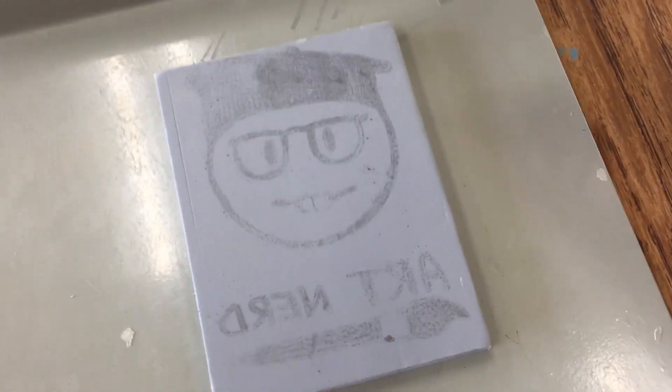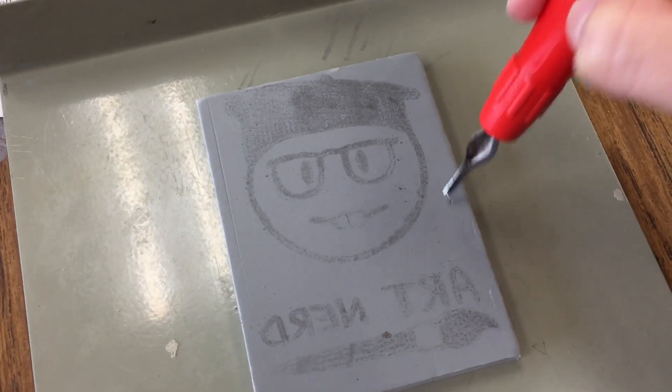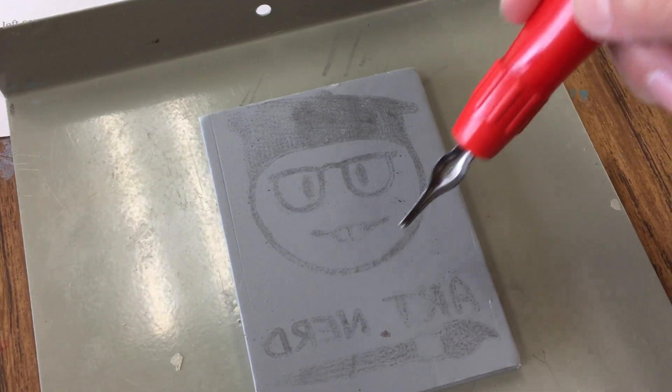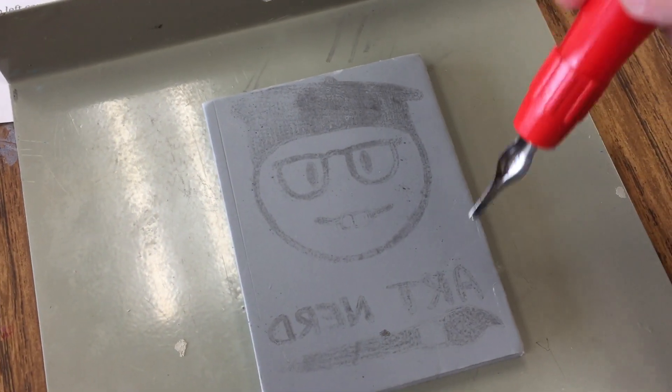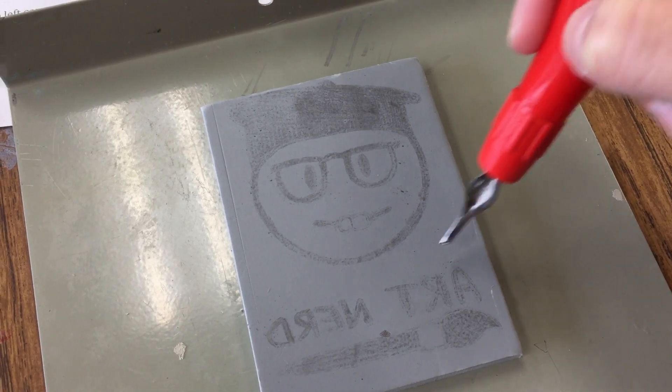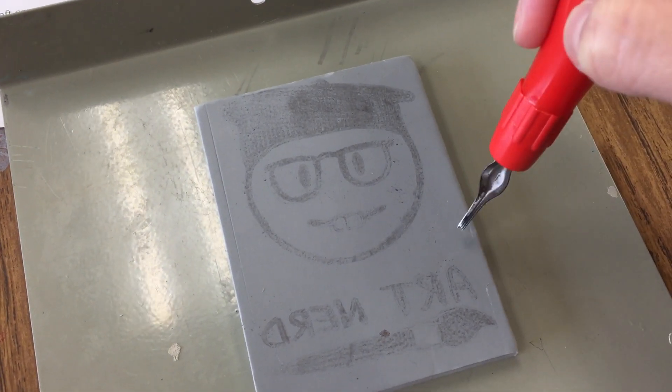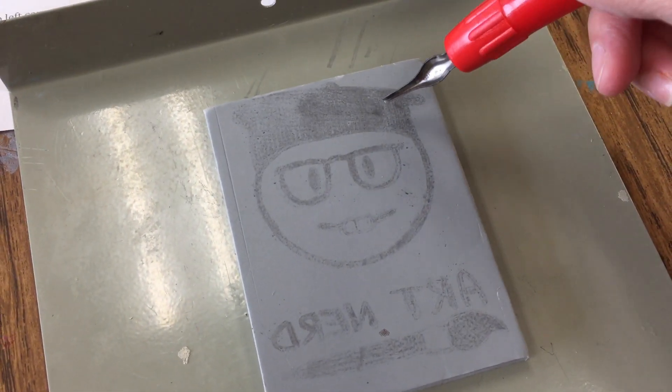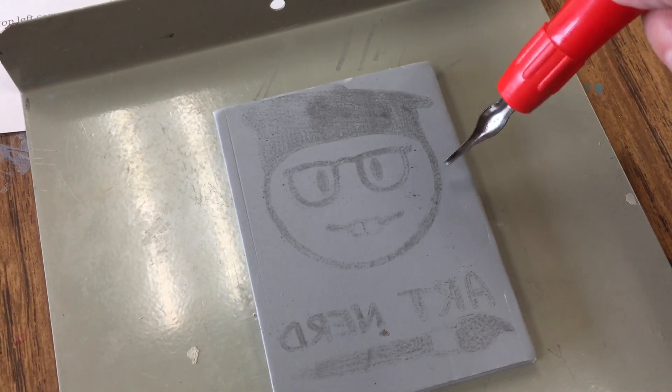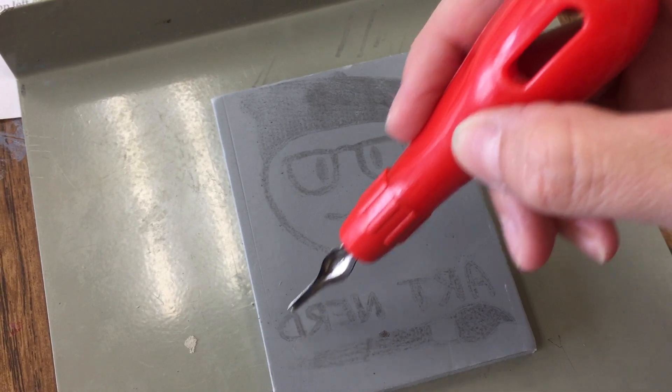I'm going to make a decision. I want to cut away everything that's not pencil because everything that is black I want to be the color of my printing ink, and the part that I'm carving away to be the color of my paper, either white or colored paper.